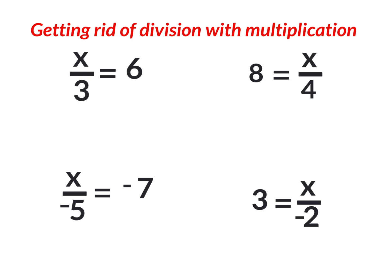On these next examples we have to get rid of division with multiplication. It says x divided by three — a fraction really is a division problem. It says x divided by three equals six. You may be able to figure this out in your head: what number divided by three equals six? Eighteen divided by three equals six. However, you want to show your work and show the process of getting x by itself on one side of the equal sign.